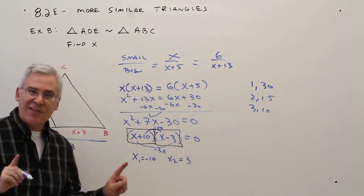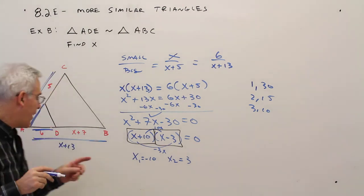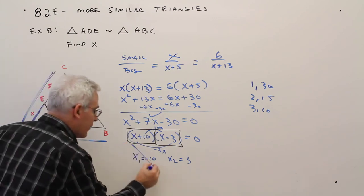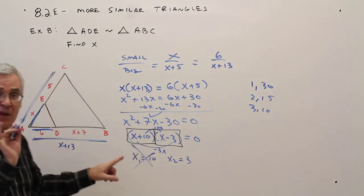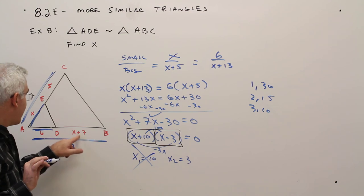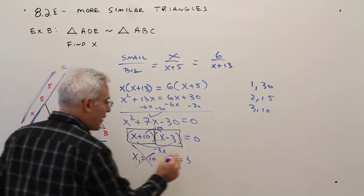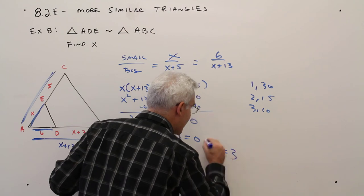It's not that X can't be negative. It's the side length can't be. So in this case, X can't be negative 10. So let's make sure that 3 makes sense. Positive, positive, looking good. So they said find X. So X is just 3.